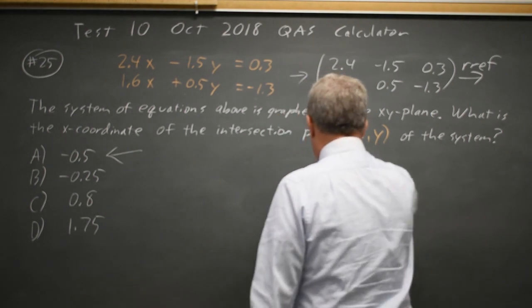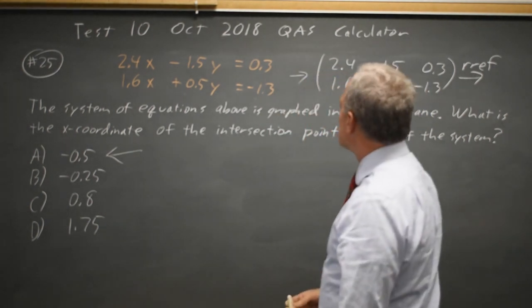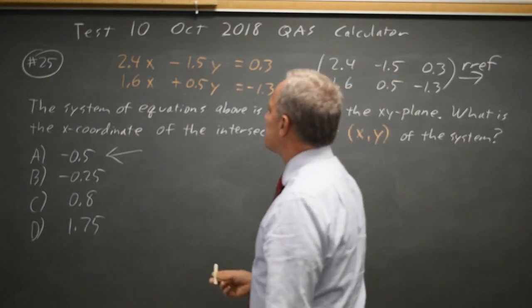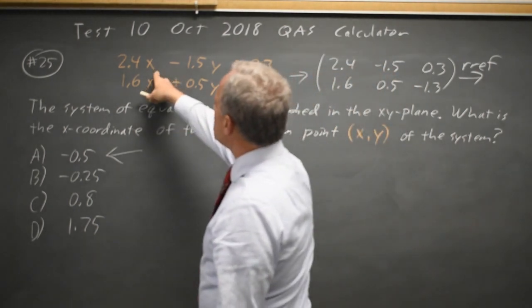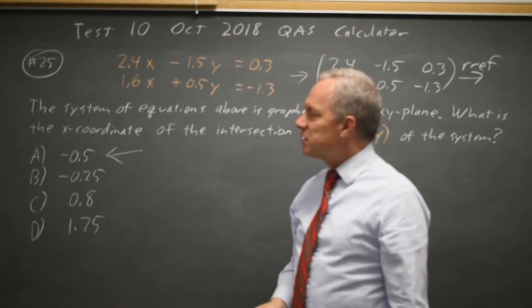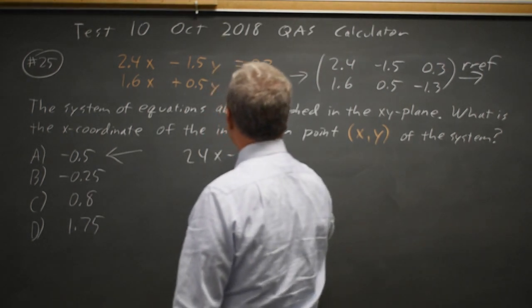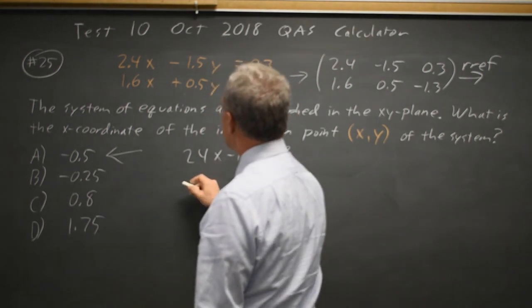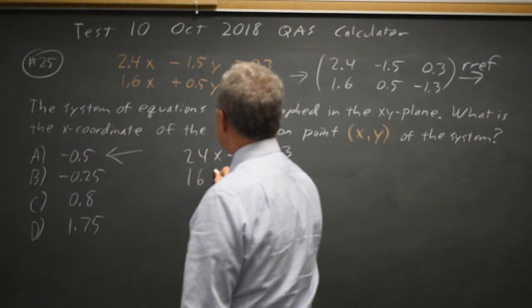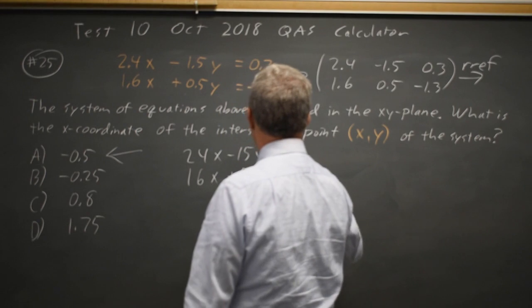Alternatively, since we don't always have a graphing calculator, and since it's important to have these skills, I'm going to multiply by 10 because I'm not fond of decimals. Decimals lead to careless errors. I don't like careless errors. So that's 24x minus 15y equals 3, and 16x plus 5y equals negative 13.